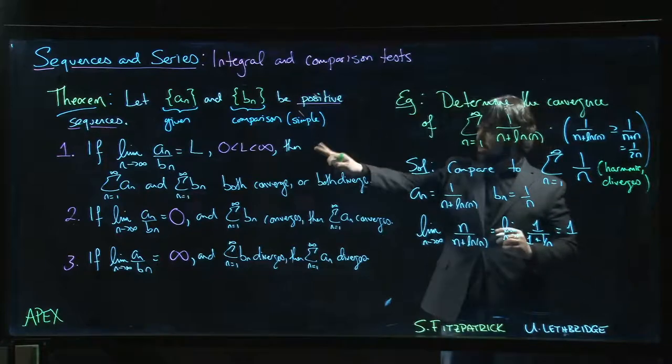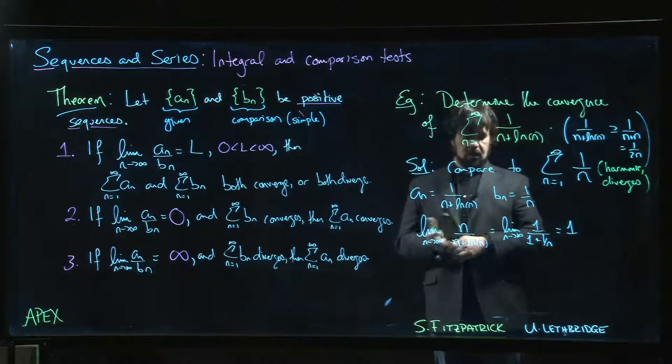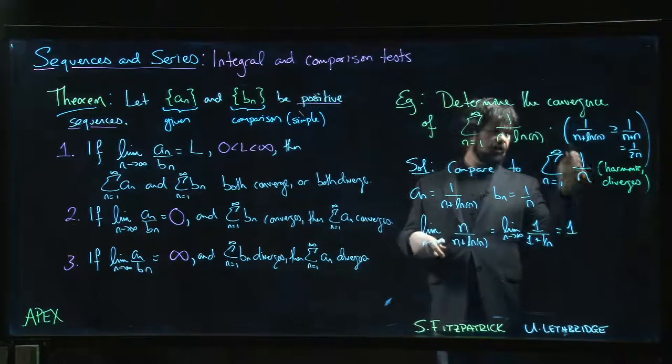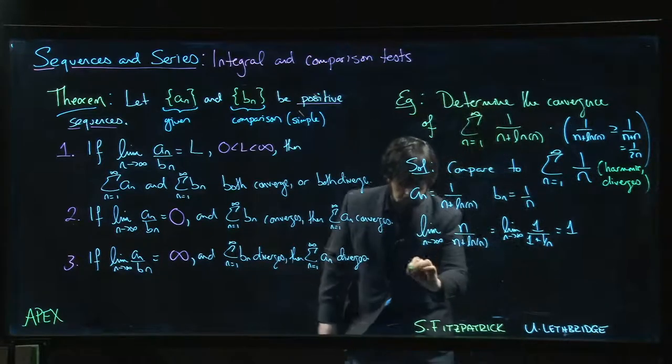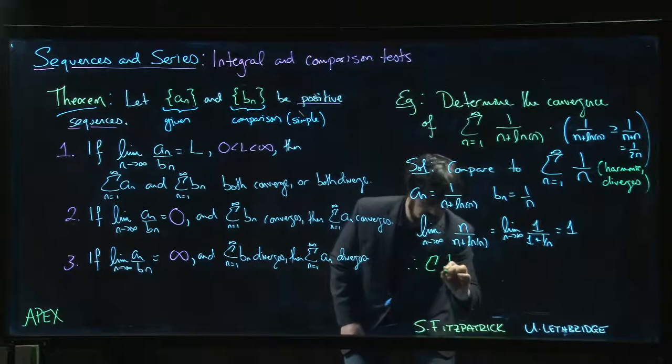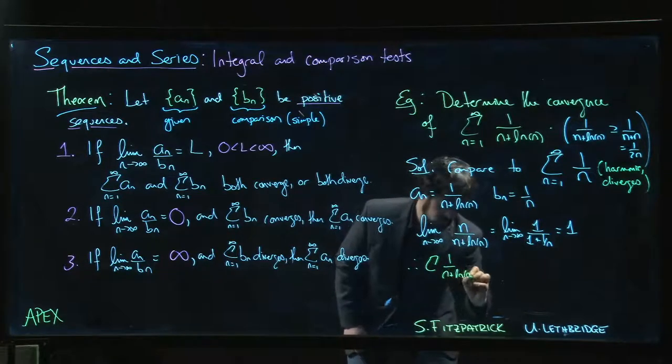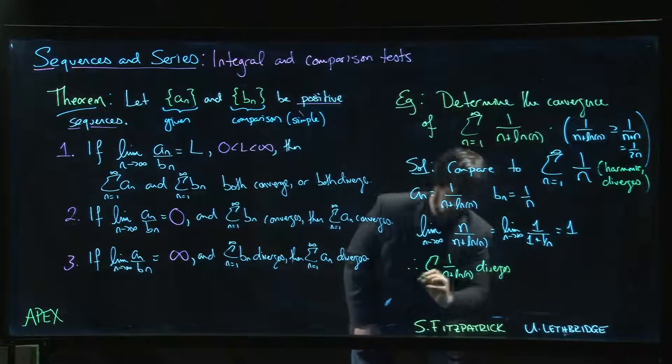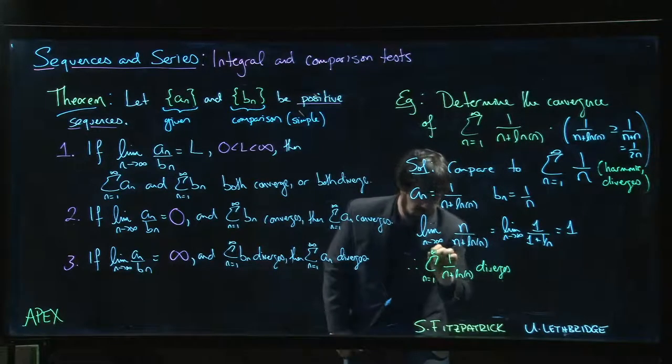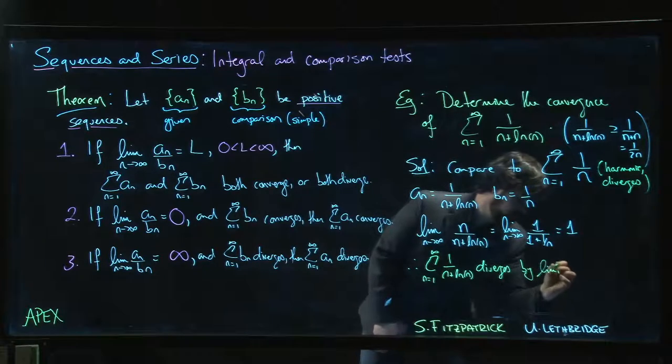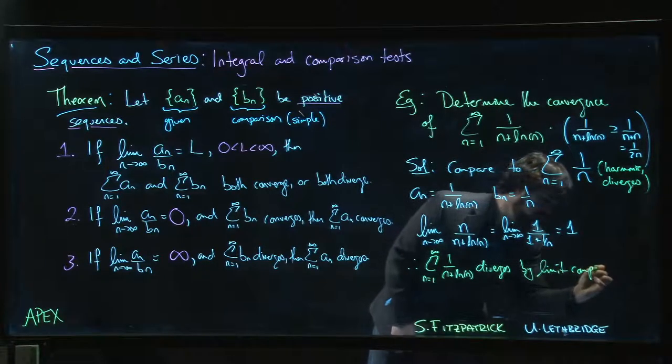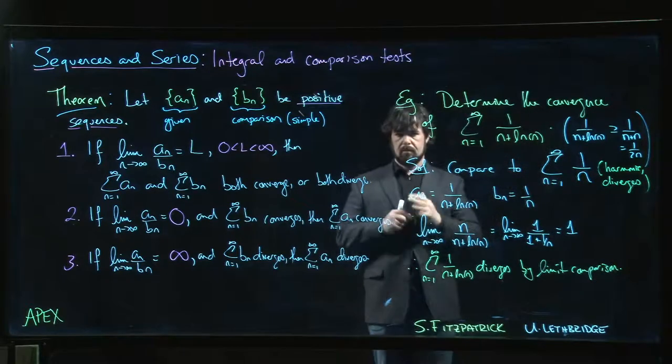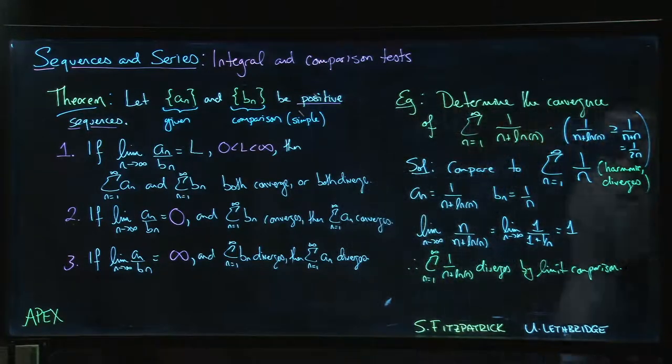Again, we get 1 for the limit. So we're in that first case. The limit is 1, so either both diverge or both converge. In this case, we know that that one diverges. So we know that this series diverges from 1 to infinity by limit comparison. And we're done. Thank you.